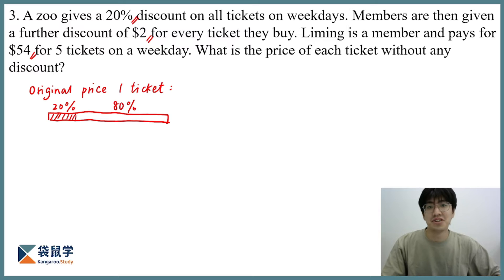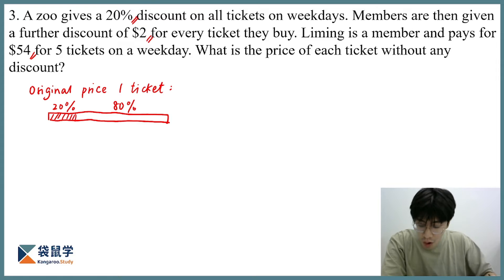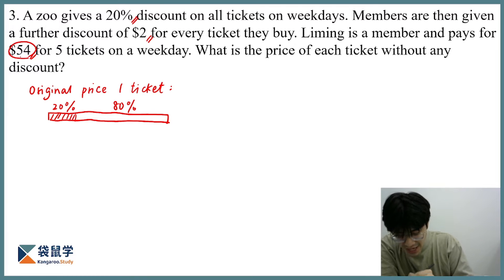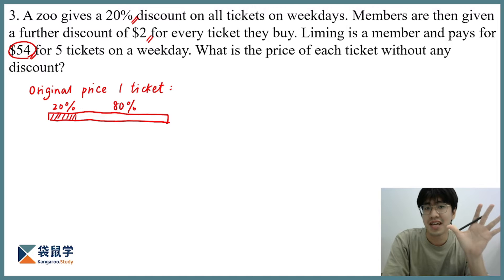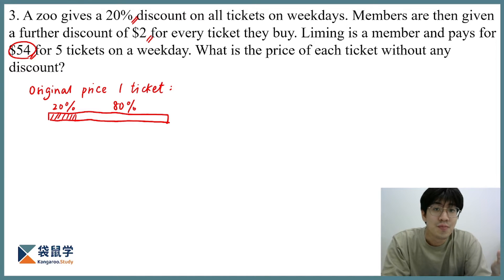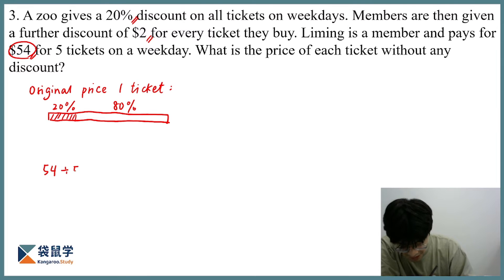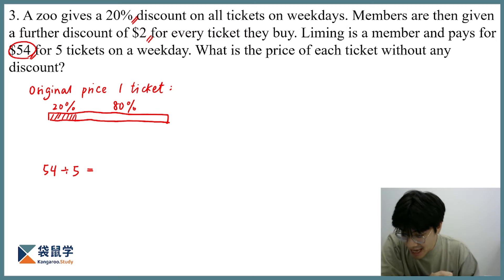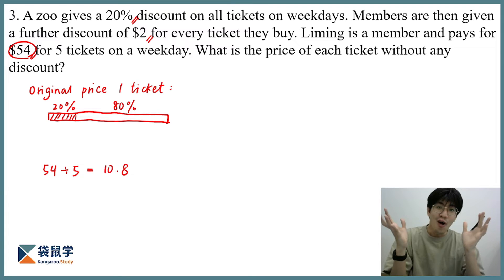Let's see if we can find that information from the question. The $54 paid by Li Ming is for 5 tickets. Since we are only talking about 1 ticket, we take 54 divided by 5, which gives us 10.8.